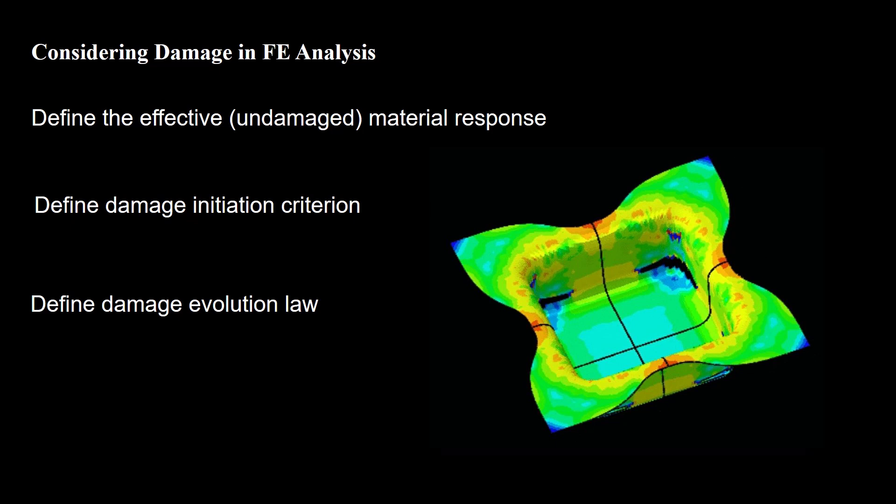Once the material stiffness is fully degraded, we can remove the elements by defining element deletion. Please watch our videos which show how to model damage of metals in Abaqus software. Thanks for watching this video. If this video was helpful, please let us know by a like, a comment, or a subscribe.